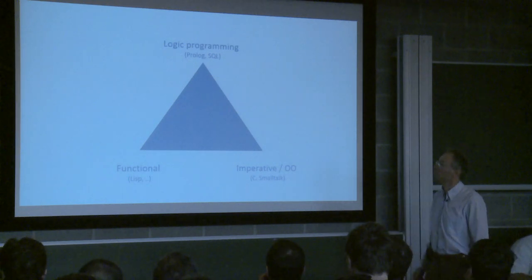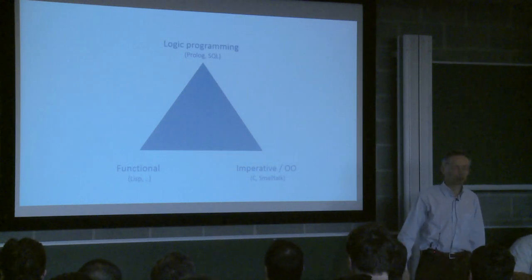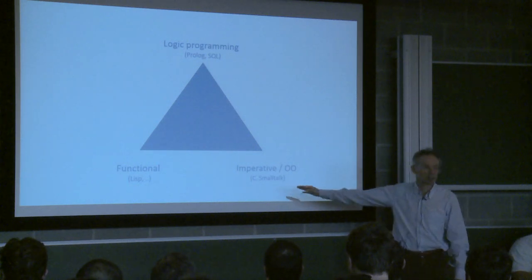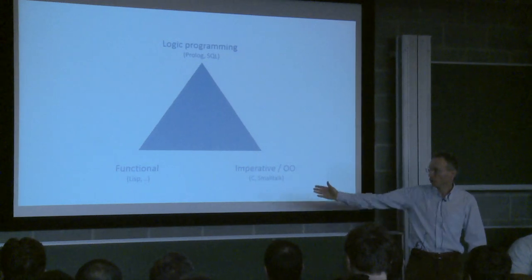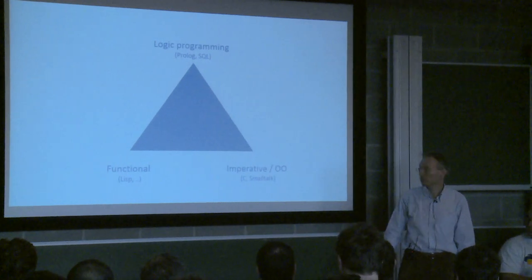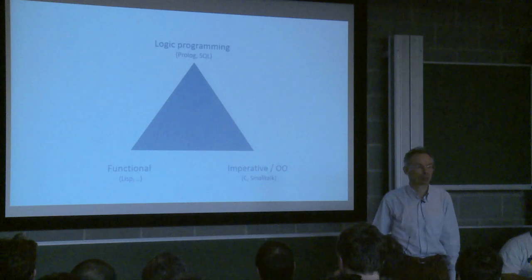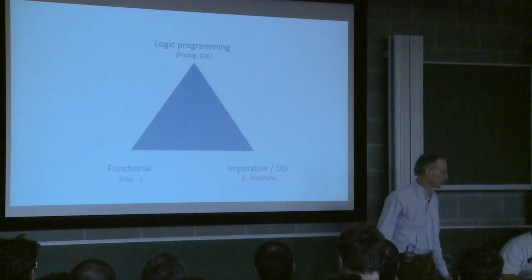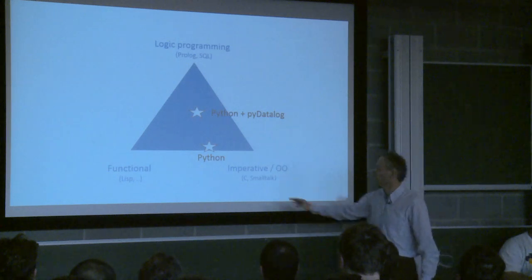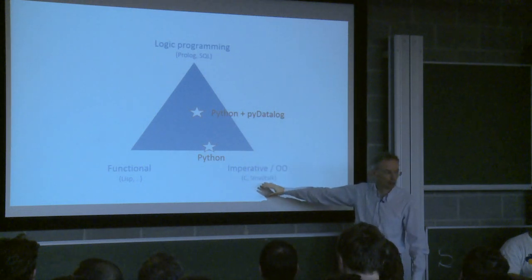So what is logic programming really? It's one of the three main programming paradigms. Of course, the most popular one is imperative and object oriented with languages like C and Smalltalk. The functional programming is typically Lisp and some other languages like Haskell. And logic programming on the top of my slide is represented by Prolog, but also languages like SQL. And Python in this schema can be positioned here in the sense that it has a lot of imperative language. It's object oriented and imperative.